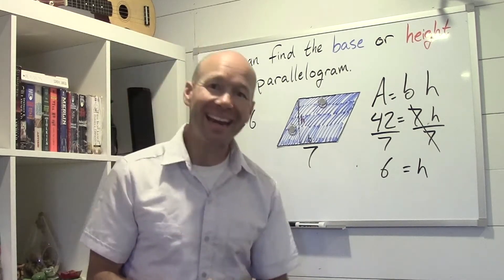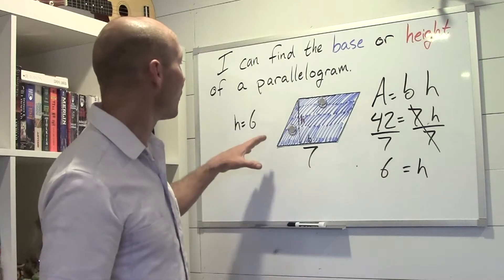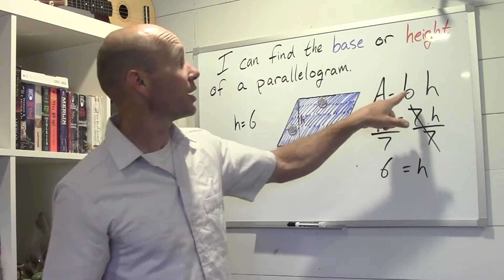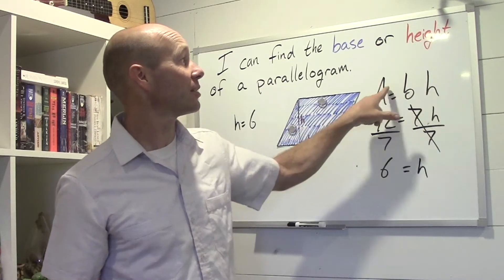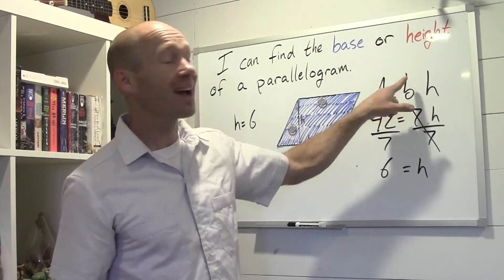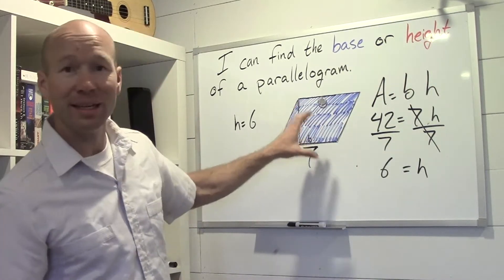And we can do that with any parallelogram. If we know the height was, h was set to six, then we would know that b times six equals 42, and we would know that six times seven equals 42.